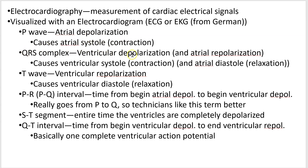The QRS complex represents ventricular depolarization, and atrial repolarization causes ventricular systole while ultimately leading to atrial relaxation. You have an electrical stimulus followed by contraction, then reversion of that electrical stimulus causing relaxation — atria first, ventricles next. The T wave is ventricular repolarization and its result.